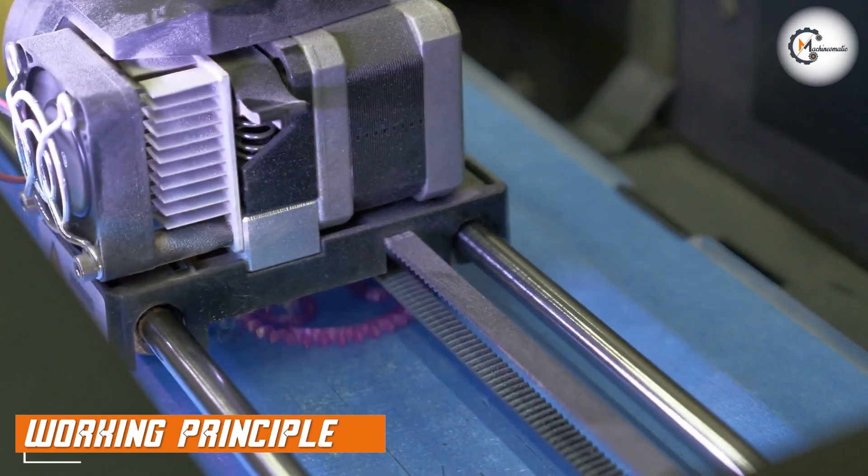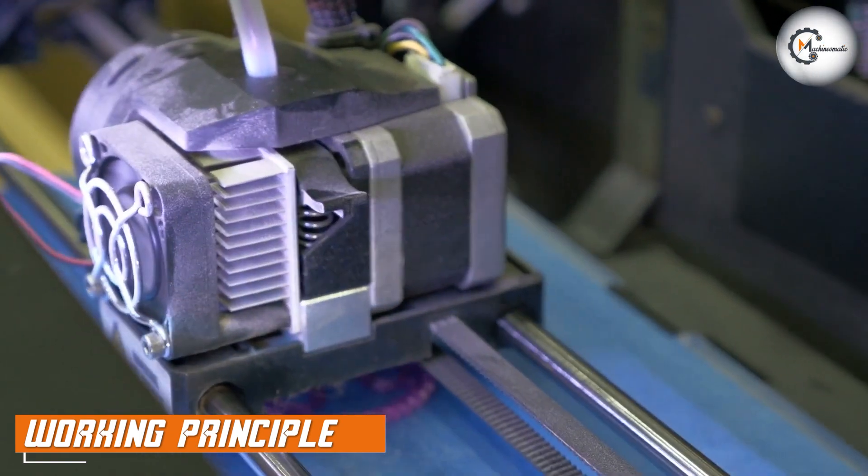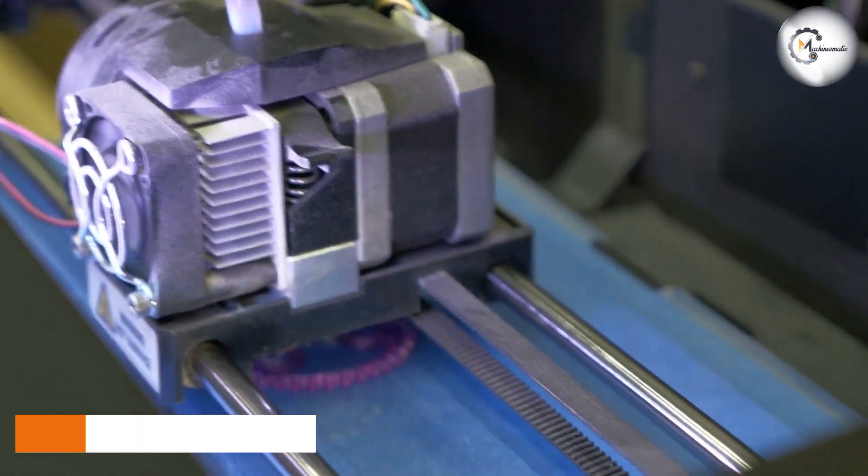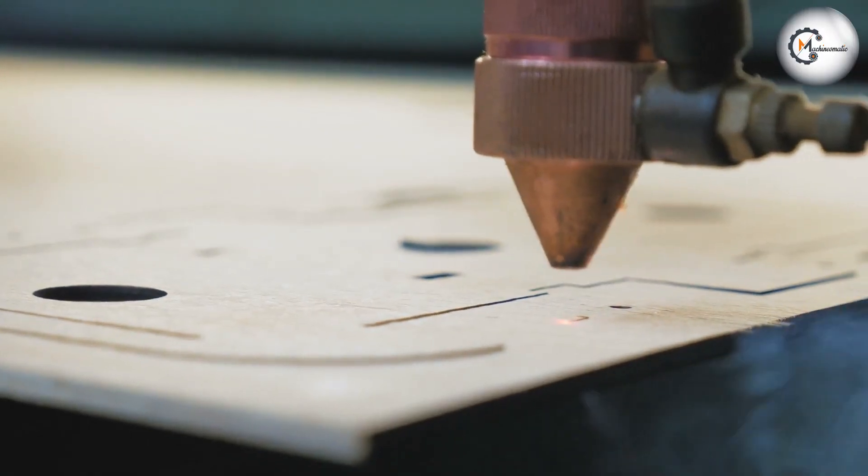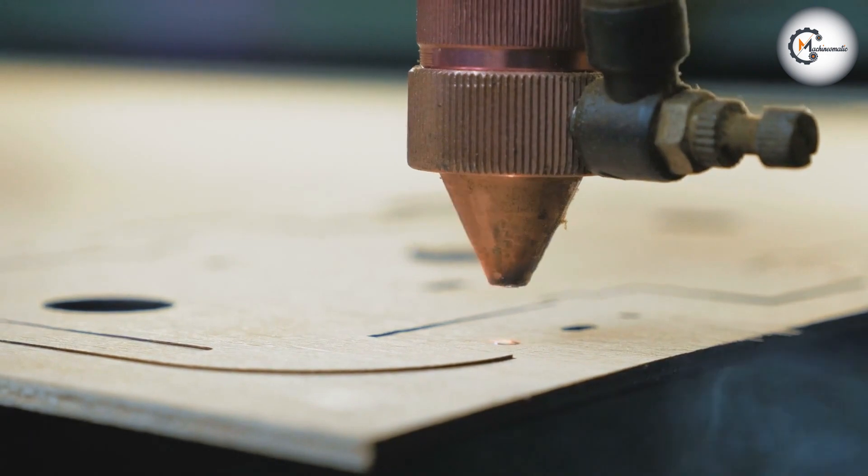A 3D printer uses a process called additive manufacturing to create a three-dimensional object by layering material on top of itself. A laser cutter, on the other hand, uses subtractive manufacturing to cut or etch a design into a material.